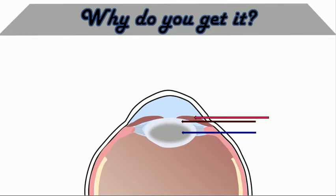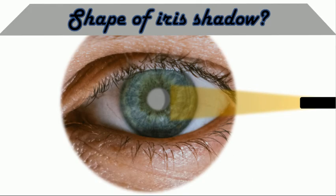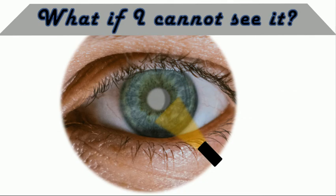In an immature cataract, there are still a few clear lens fibers present between the iris and the lenticular opacity, and so you see an iris shadow. In a mature cataract, there are no clear lens fibers, and so you see no shadow. What is the shape of the iris shadow? It is crescentic in shape.